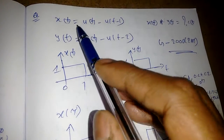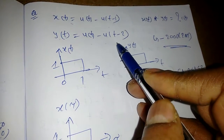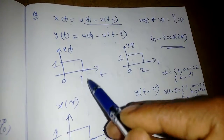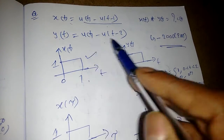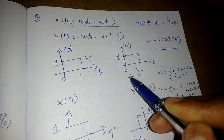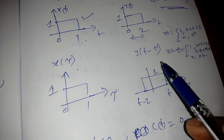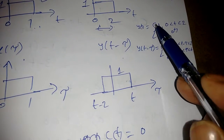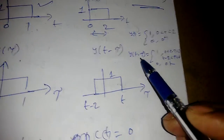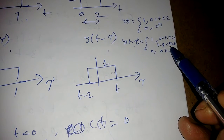Next, a question from 2004: x(t) = u(t) - u(t-1) and y(t) = u(t) - u(t-2). x(t) is a rectangular pulse from 0 to 1 with amplitude 1, and y(t) goes from 0 to 2. We make x(τ) and then y(t-τ) — substituting t-2 gives limits t-2 to t.